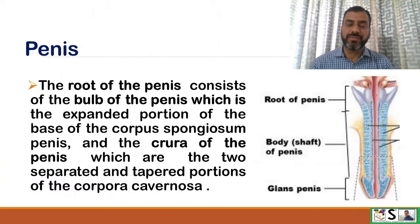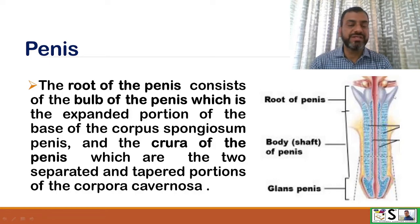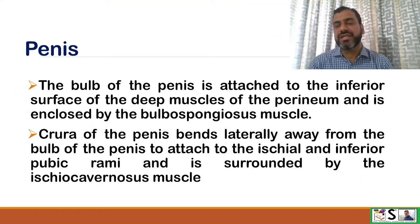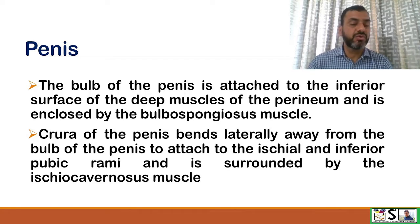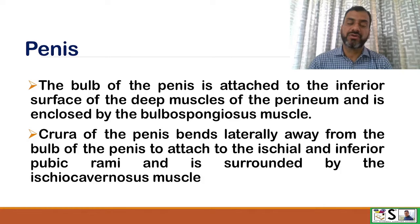The root of the penis consists of the bulb of the penis, which is the expanded portion of the base of the corpus spongiosum, and the crura of the penis, which are the two separated tapered portions of the corpora cavernosa. The bulb of the penis is attached to the inferior surface of the deep muscles of the perineum and is enclosed by the bulbospongiosus muscle. The crura bend laterally away from the bulb and attach to the ischial and inferior pubic rami, surrounded by the ischiocavernosus muscle.